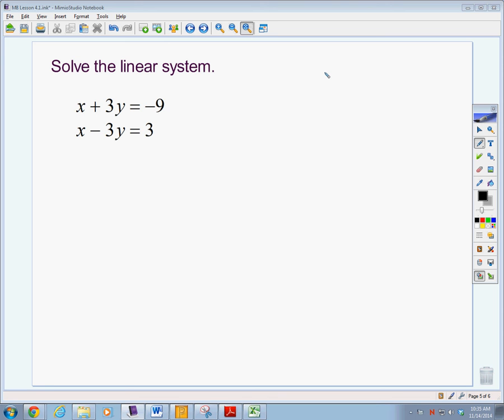Now when we did our other examples, they were already in slope-intercept form for us. So what happens when we look at a linear system like this? x plus 3y equals negative 9, and x minus 3y equals 3.